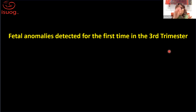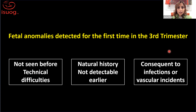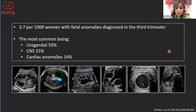Regarding fetal anatomy — fetal anomalies detected for the first time in the third trimester could be one of three things: they were missed earlier due to a difficult baby position or high maternal BMI; the natural history of the condition means it would not be detectable earlier; or there was a fetal infection or vascular incident that led to an abnormality that became obvious in the third trimester.